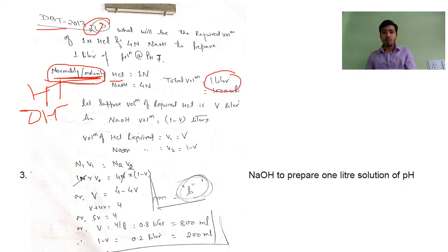How much total volume is there? 1000 ml, which is 1 liter solution at pH 7. HCl is 1 normal, and NaOH is 4 normal.